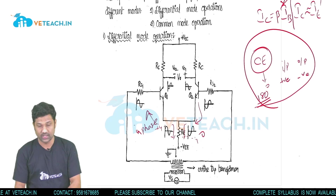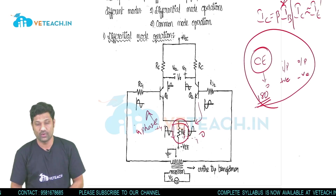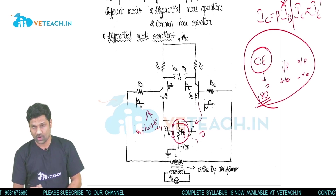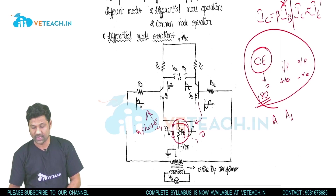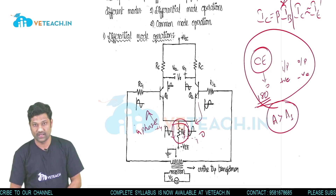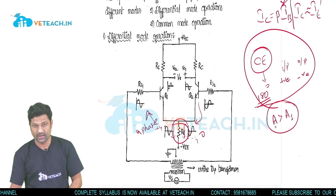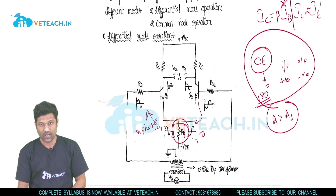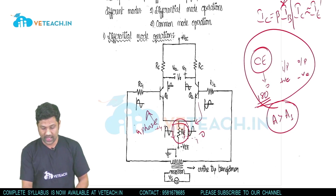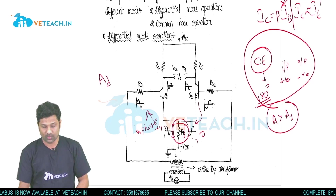This means in differential mode operation, when different inputs are provided to the two transistors, there is no signal flowing through RE. Since the signal through RE acts as feedback, and there is no signal flowing through RE, there is no feedback. Without feedback, the gain is not decreased, so the differential gain Ad will be very high.